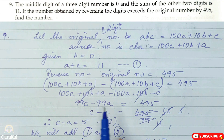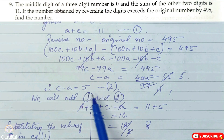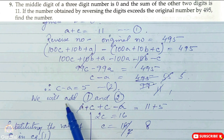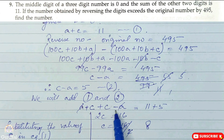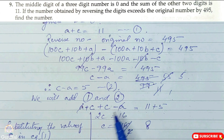After cancellation we get 99C minus 99A = 495. Taking 99 common: C minus A = 495 divided by 99. Calculating: 495 ÷ 99 = 5, so C minus A = 5 (equation 2). Now we add both equations: (A plus C) plus (C minus A) = 11 plus 5. The A and minus A cancel, leaving 2C = 16.